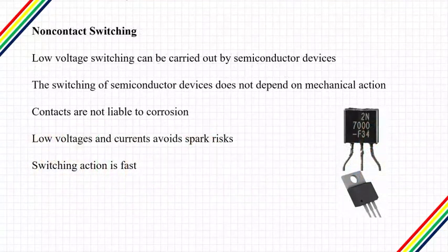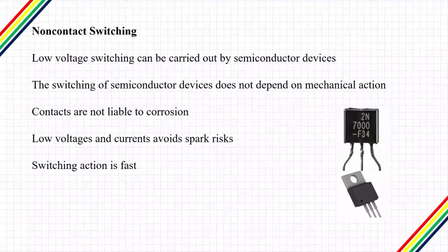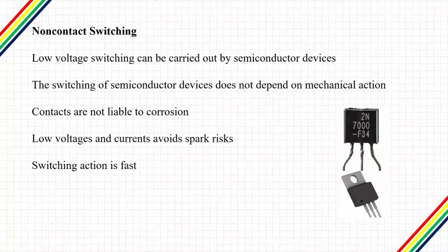Non-contact switches do not use a mechanical system. These are applicable for low voltage switching and can be carried out by semiconductor devices such as BJTs, FETs, or thyristors. The switching of semiconductor devices does not depend on mechanical action. The main advantages of this type of switch are that it can be used in hazardous environments because the switch contacts are not exposed to the environment, so corrosion and other material degradation are not possible.